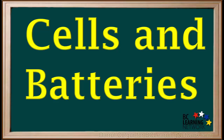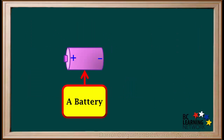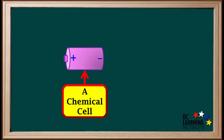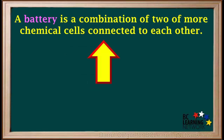We'll look at the difference between a cell and a battery. When most of us see a device like this, we call it a battery. Technically, it's not really called a battery — it's called a chemical cell. A battery is actually defined as a combination of two or more chemical cells connected to each other.